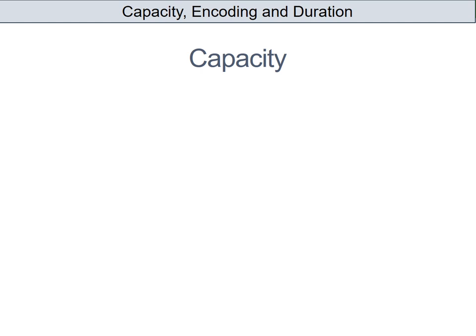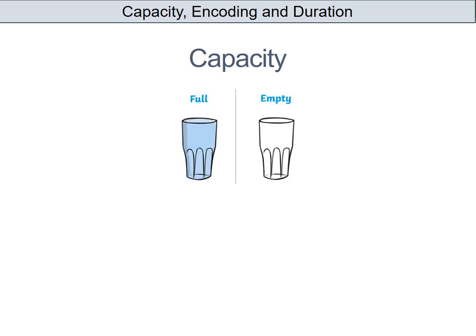This first word, capacity, you're probably already familiar with. You've probably come across it in different situations and it literally just means how much — so how much something can contain. When we're talking about memory, we're asking about how much information, particularly short-term and long-term memory, can contain.